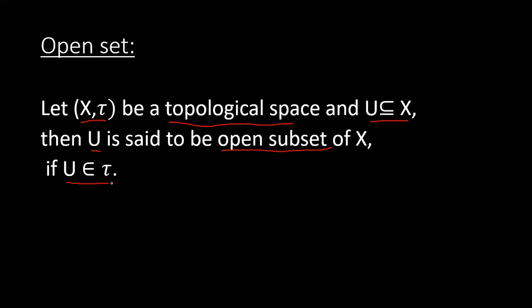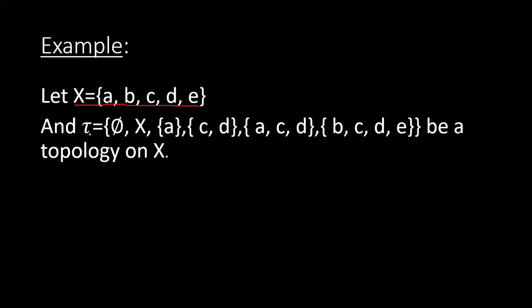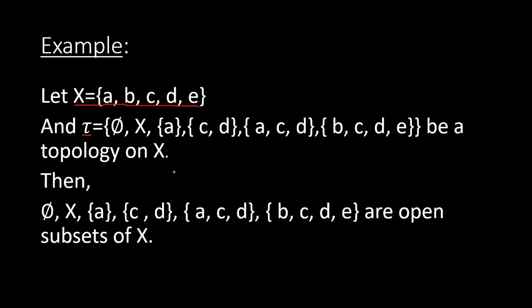Now we will take an example. Let X = {a, b, c, d, e} — a space containing five elements — and let τ = {φ, X, {a}, {c,d}, {a,c,d}, {b,c,d,e}}, which is a topology on X. Then the open subsets of X are: φ, X, {a}, {c,d}, {a,c,d}, and {b,c,d,e} — all subsets that belong to τ.